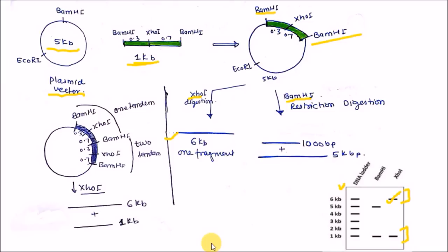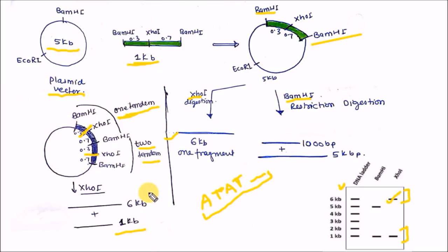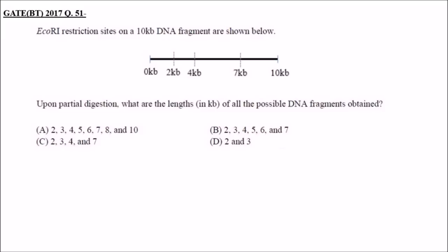The correct answer is option C. This is explained by tandem repeats — repetition of nucleotides adjacent to each other. The insert is repeated in a tandem manner: one tandem copy followed by a second tandem copy, not in a dispersed manner. When you digest with XhoI, there are two XhoI sites, giving a 1 kb fragment and a 6 kb fragment total, confirming option C is correct.